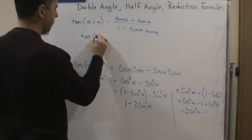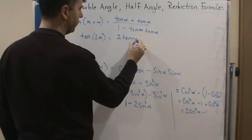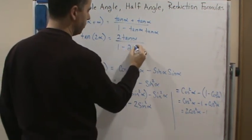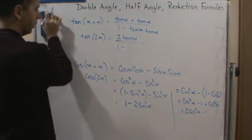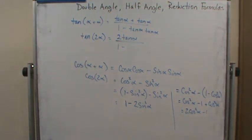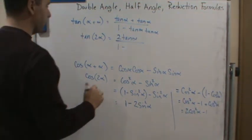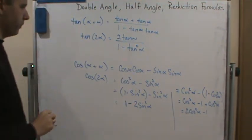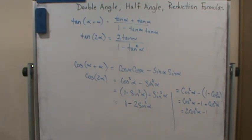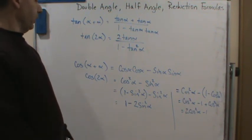So we get tangent of two alpha equals what? Now we get two tangent alpha in the numerator over one minus two tangent, oh, not two, squared. Whoops. So this will be one minus tangent squared theta. And then, of course, we can change this, right? But again, let's leave it as tangent squared. But that's it.